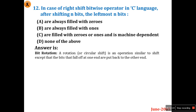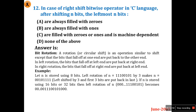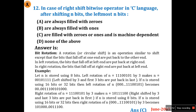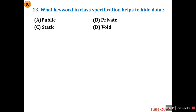For bit rotation: a rotation is an operation similar to shift, except that the bits that fall off at one end are put back into the other end. This is useful in some applications. So the leftmost bits after a right shift are machine dependent — filled with zeros or ones depending on the machine. Option C is the right answer.